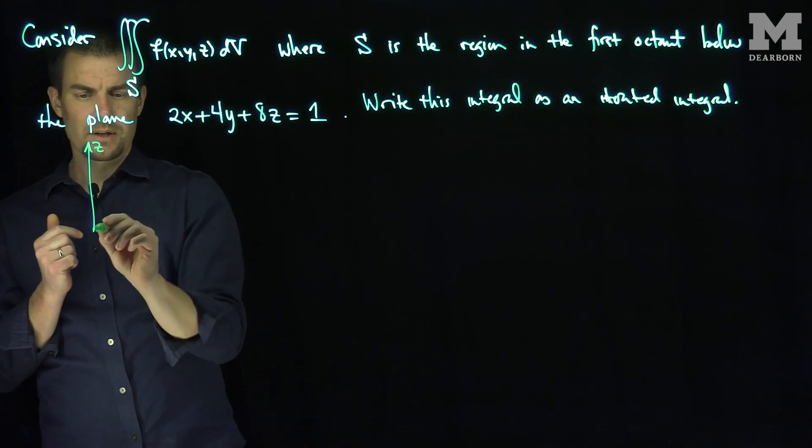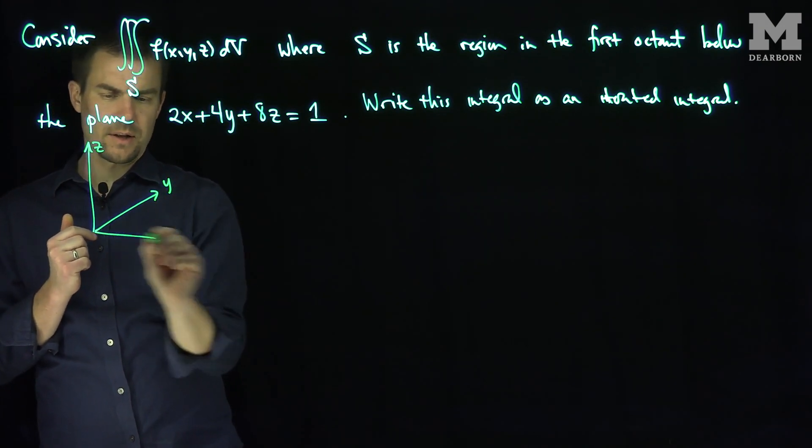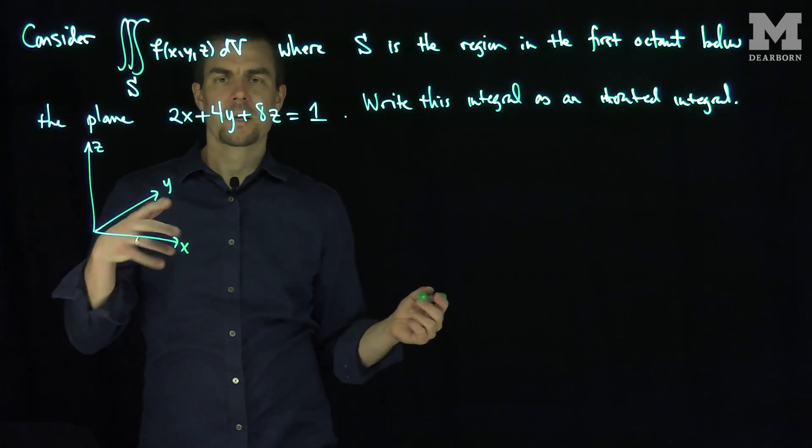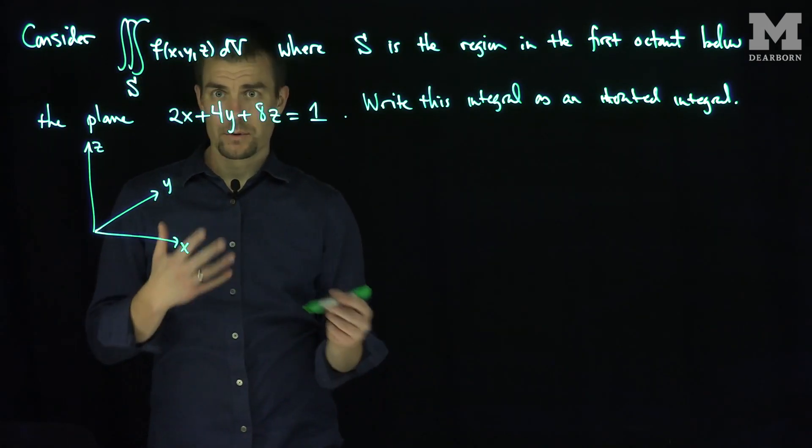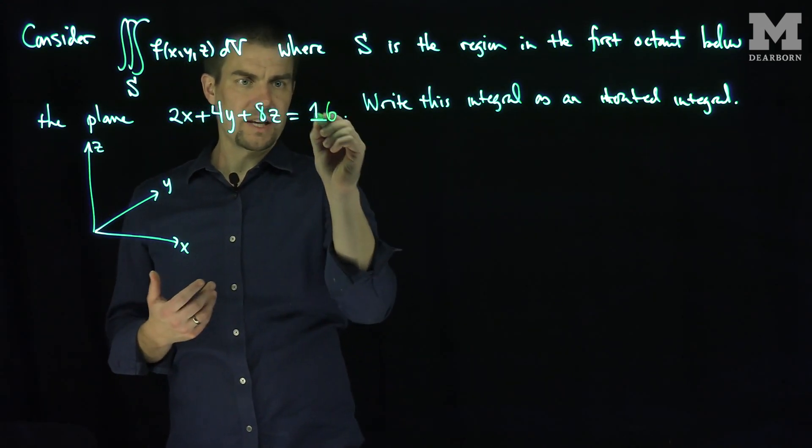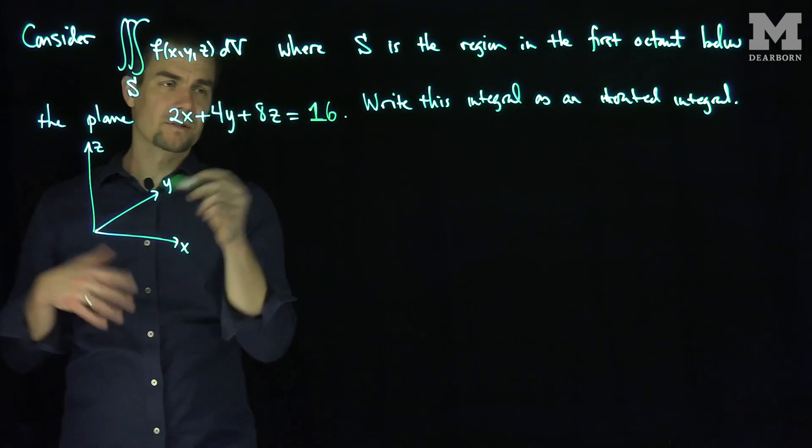So here's my z-axis, here's my y-axis, and then here's my x-axis. And then I have this plane 2x plus 4y plus 8z is equal to 1. Maybe to make our life a little bit easier, let's turn that into a 16, right? Because that makes things a lot more evenly divisible.